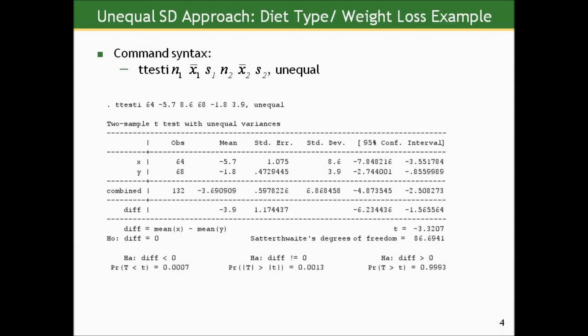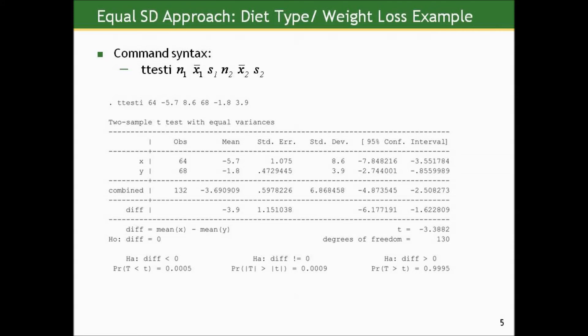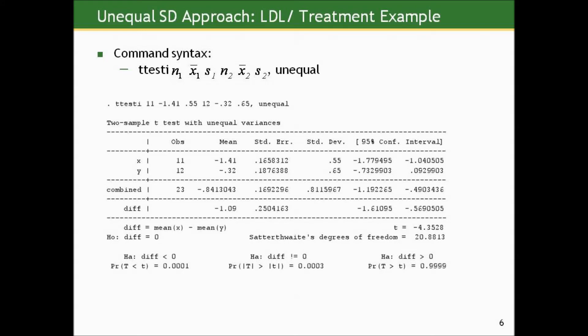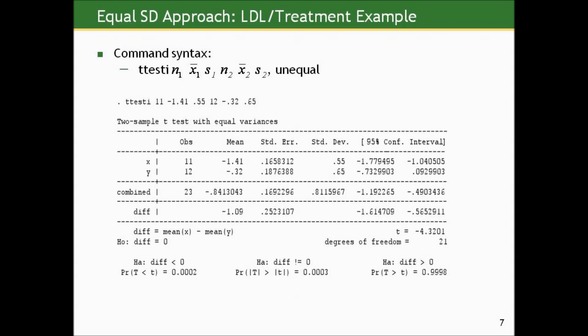Here's that approach applied to the weight change and diet example. Here's the approach assuming equal standard deviations — the only difference in the command is you leave off that comma unequal, since the default is to assume equal standard deviations. You'll see that the confidence intervals cover very similar territory and the inference is the same, but the p-value from the unequal variances approach is slightly higher. And here's the same comparison for the LDL cholesterol change drug type example. Again, very little difference in the inferences you would make, which is typical with similar sample sizes. But when you get into less balanced sample size situations, you start to see a difference.